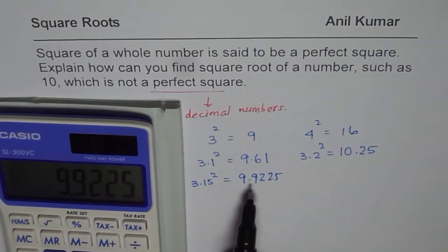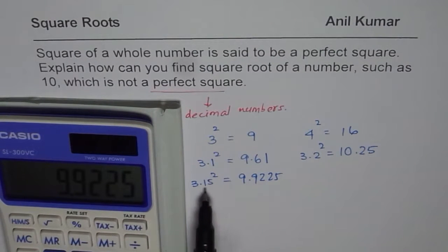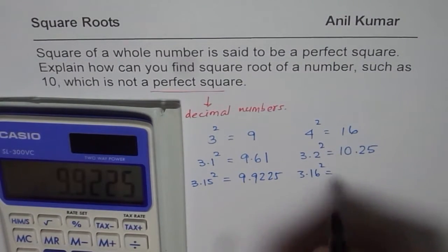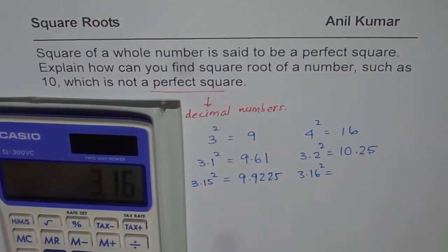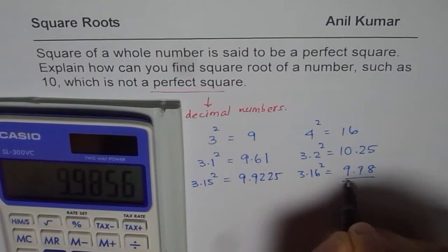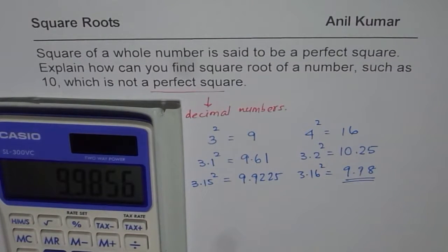Now, that is slightly less than 10. So we can go a bit higher. Let me try 3.16 square. 3.16 times 3.16 equals to 9.98. Now, 9.98 is very close to 10. So you could say approximately 3.16.